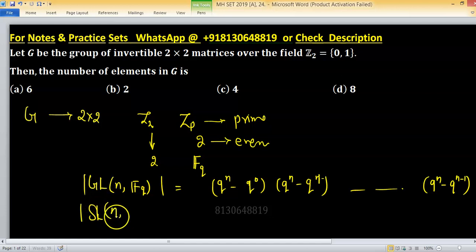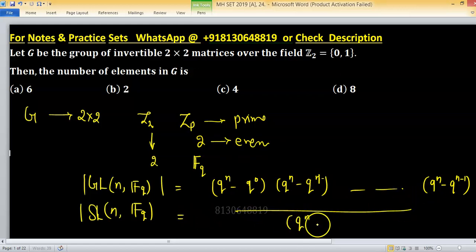And when this is a special linear group over the field FQ, this is same in the numerator and in denominator Q raise to the power n minus Q raise to the power 0. This is in the numerator and over the denominator.